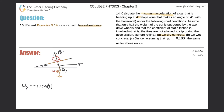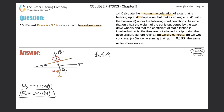So W sub y equals negative W cosine of four. The normal force is equal and opposite in sign to W sub y, so the normal force equals positive W cosine of four. This is important because now I can connect it to the static friction formula: the force of static friction is less than or equal to the coefficient of static friction multiplied by W cosine of four.